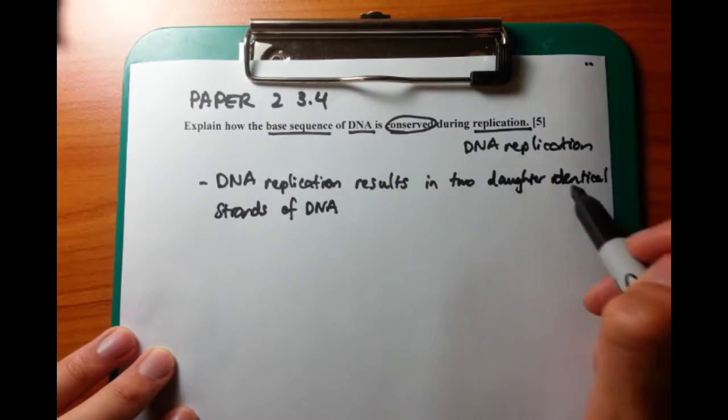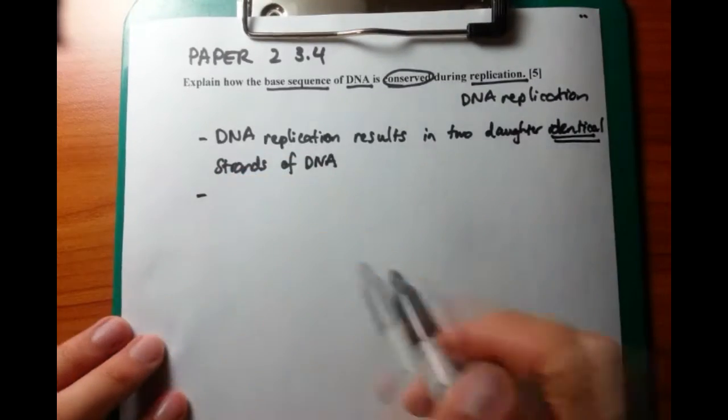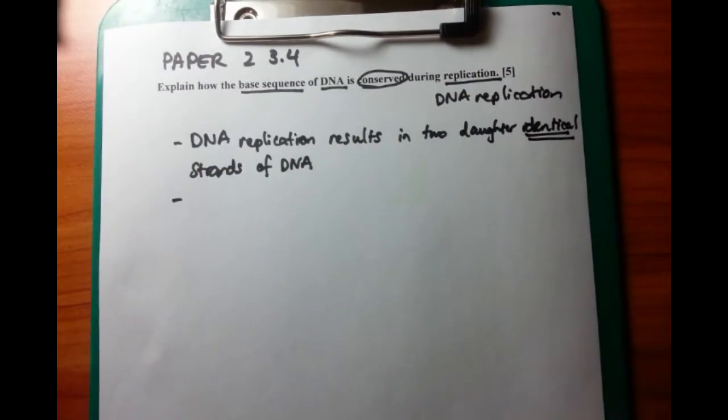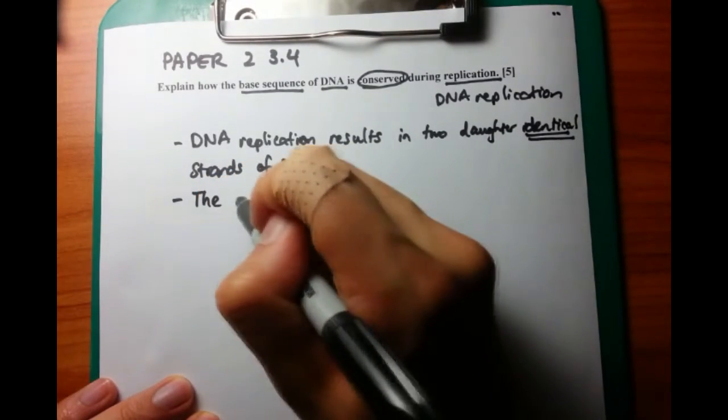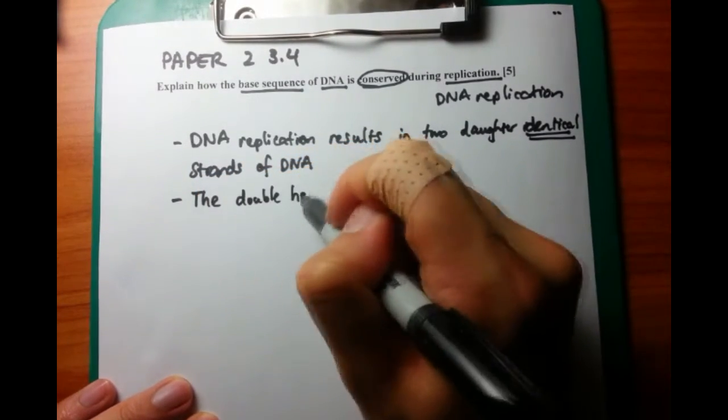So what happens first of all? Imagine you've got the double helix structure of DNA. Before you can replicate that, you need to break that down and unwind it as well. So two things: breaking it down and unwinding.